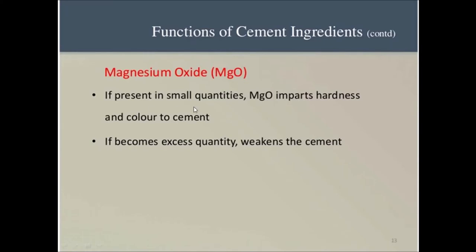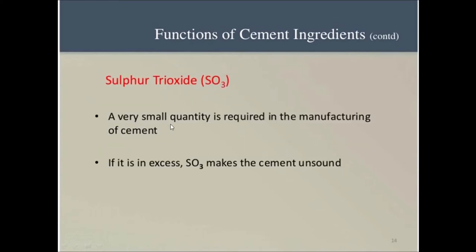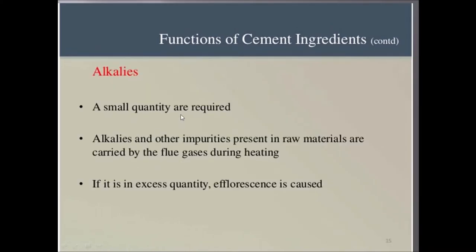Magnesium oxide, if present in small quantity, imparts hardness and color to cement. But if present in excess quantity, it weakens the cement. Sulfur trioxide: a very small quantity is required in the manufacturing process, but in excess it can make the cement unsound — meaning the cement will expand. A small quantity of alkali is appreciated, but if present in excess, efflorescence is caused.